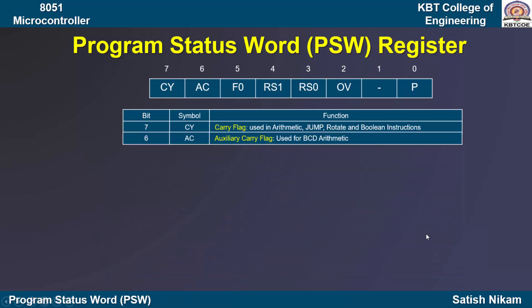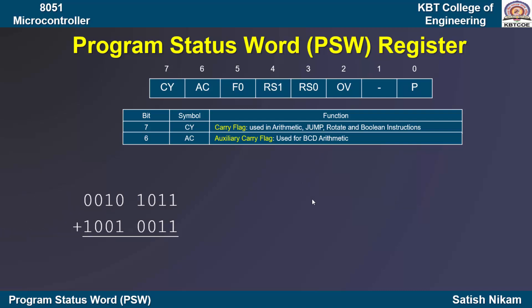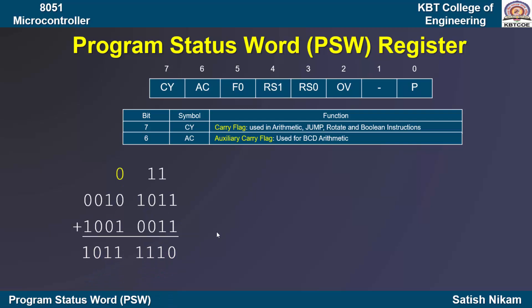The next bit is the sixth bit, which is the auxiliary carry flag denoted by AC, and it is used for BCD arithmetic operations. The auxiliary carry flag indicates whether the previous operation resulted in a carry from the D3 bit to the D4 bit. Let us discuss with some examples how the auxiliary carry flag gets affected. Consider an addition operation — if you perform this addition, there is no carry generated from D3 to D4, so the auxiliary carry flag will be 0.